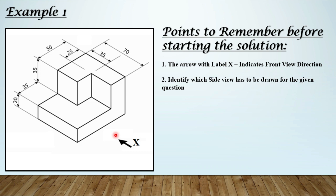Second point: identify which side view has to be drawn for the given question. There are two side views possible — one is left hand side view, second is right hand side view. For every question you may not get the same side view. As you can see here, in order to obtain the side view for this question you have to move towards the left, so here we will get the left hand side view.